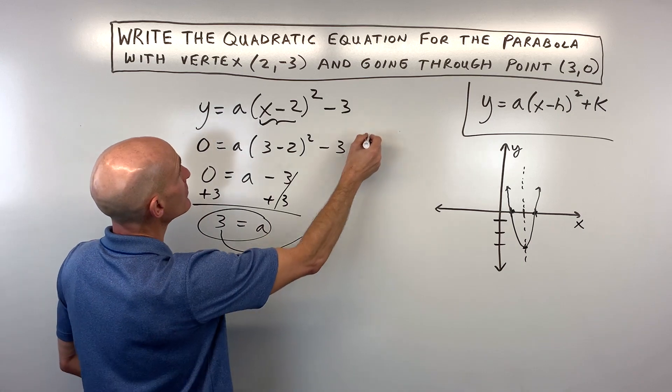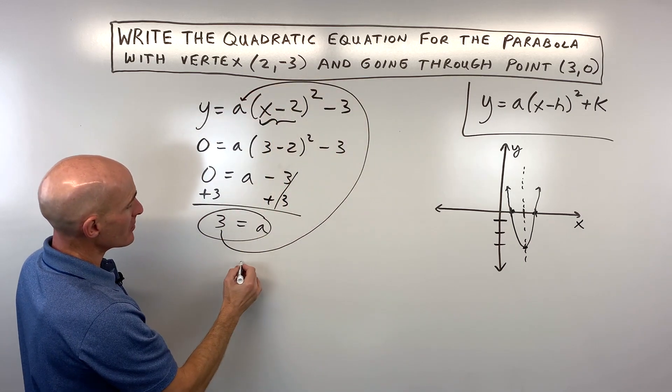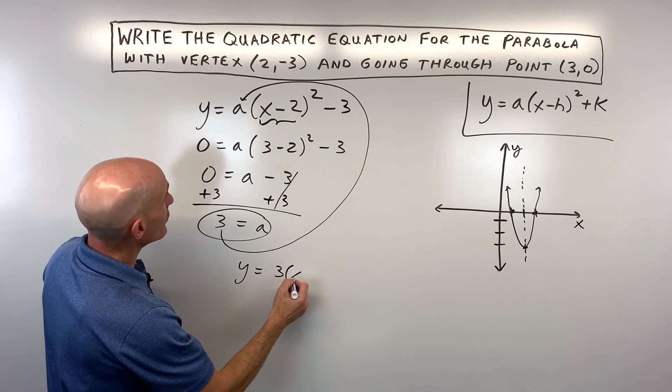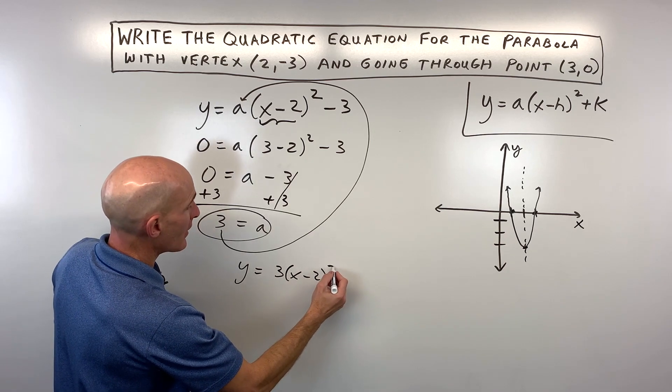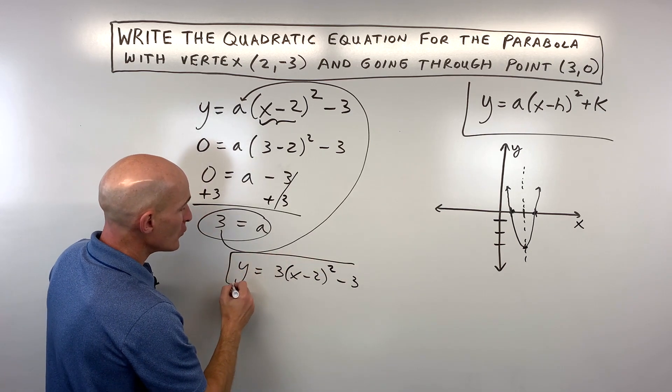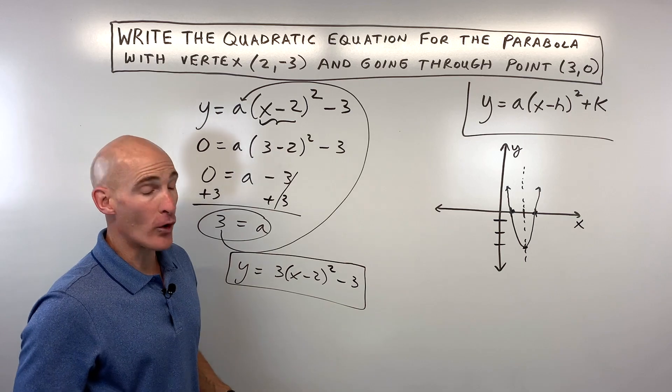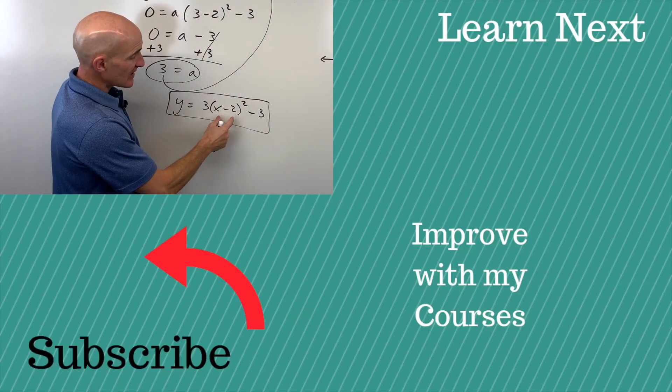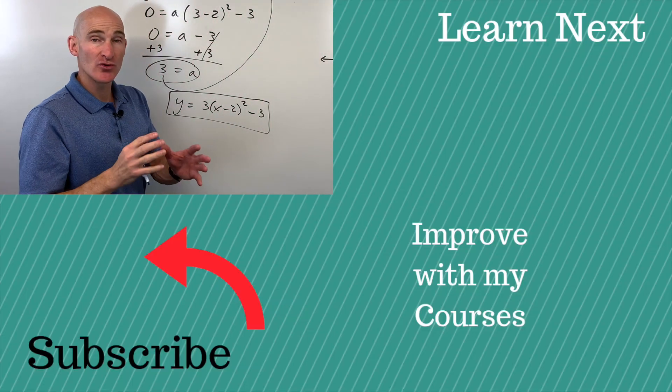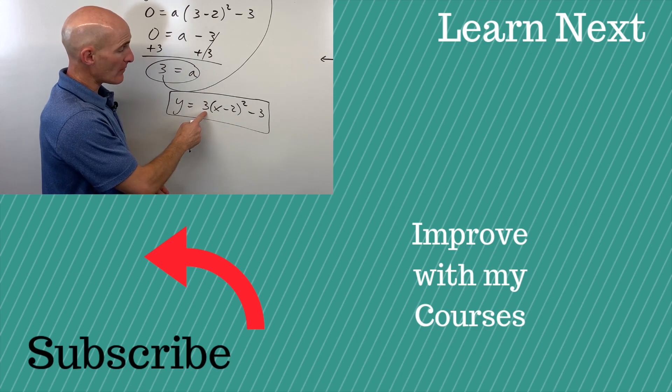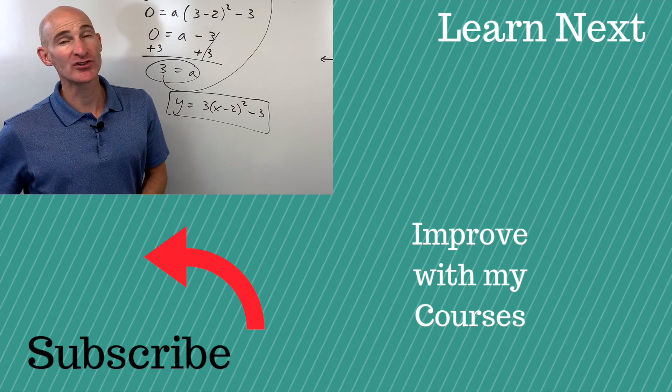Now we're going to take that 3 and put it back in for a here, and now we've got our equation of our quadratic in vertex form. If you want to rewrite this in the standard form, you can think of this as (x minus 2) times another (x minus 2), multiply those together, then multiply by 3, then subtract 3, put it in descending order, and that'll be in your standard form.